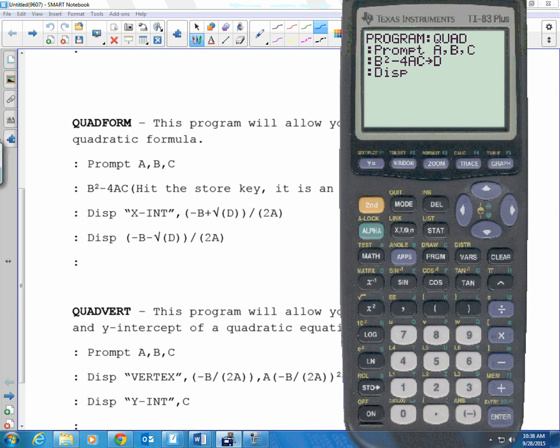And then I type in that formula, parentheses, negative, not the subtraction sign, alpha B plus the square root of D, because we already said what the discriminant was, so I just have to type in D now. Wasn't that nice and short. Divided by parentheses, 2 alpha A. Enter. Enter.